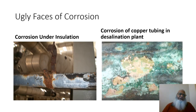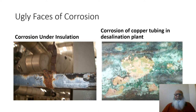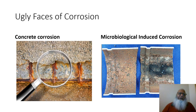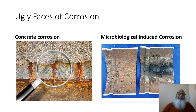Usually it is considered that corrosion is bad — and no doubt it is bad. There are a few ugly faces of corrosion shown in the slides: one on the left is corrosion under insulation, and the one on the right is corrosion of copper tubing in desalination plants. Other ugly faces include concrete corrosion and microbiologically induced corrosion. Wherever there is corrosion in industry, it ends up as ugly faces — a big atlas has even been prepared to document them.